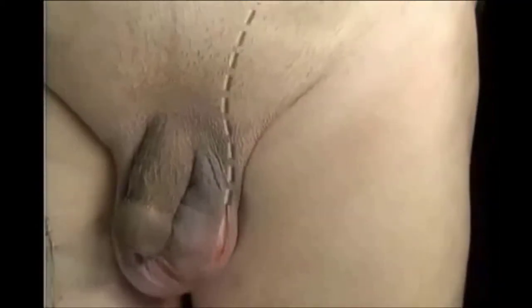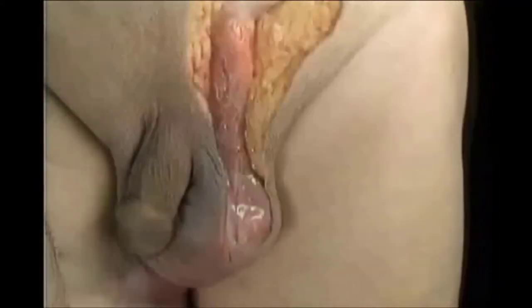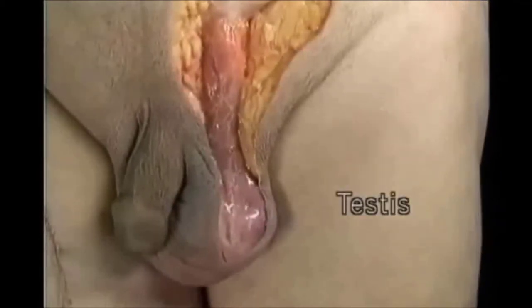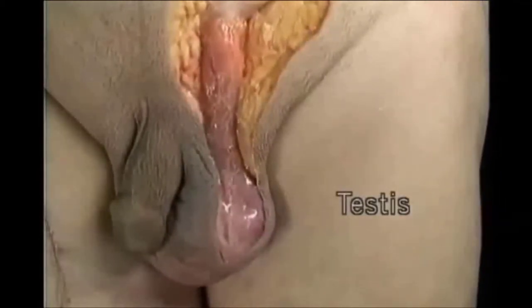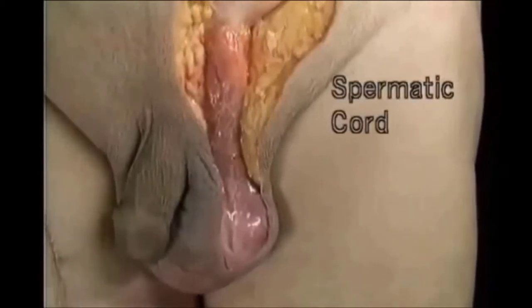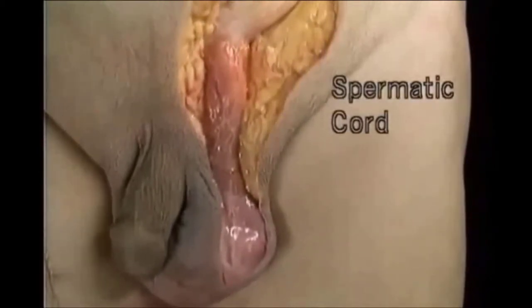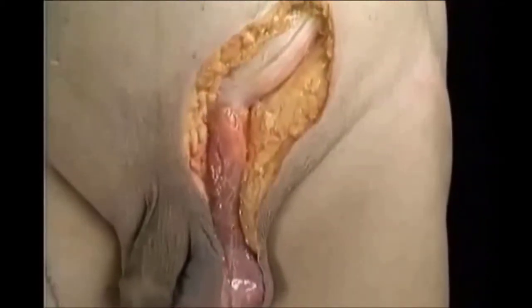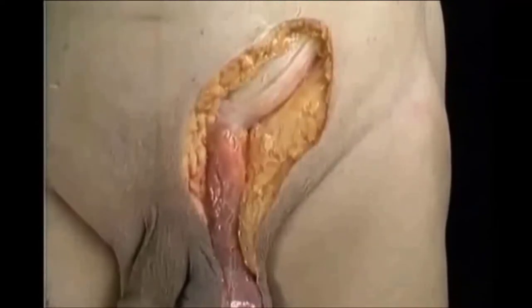To see the contents of the scrotum, we'll further divide the skin and subcutaneous tissue along this line. Here's the testis, protected by a number of covering layers. Here's the spermatic cord. The spermatic cord passes upwards, then laterally, to enter the inguinal canal, which is here.